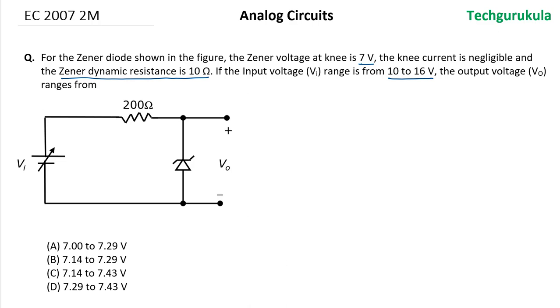The knee current is negligible, so let's take that to be very small, and the breakdown at the knee is 7 volts. Let me take that, but we are taking here the dynamic resistance as well.